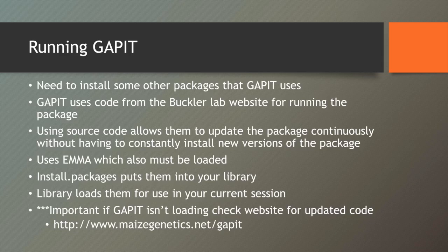In terms of running GAPIT, it needs some other programs. GAPIT uses source code from the Buckler website, which is the same place where you can get TASSEL. They use source code because it allows them to update the package continuously without always having to download a new version from the CRAN mirror. GAPIT also uses some Bioconductor packages, EMA — which is a program for estimating variance components in the P plus K model — and the standard install.packages and library functions in R.